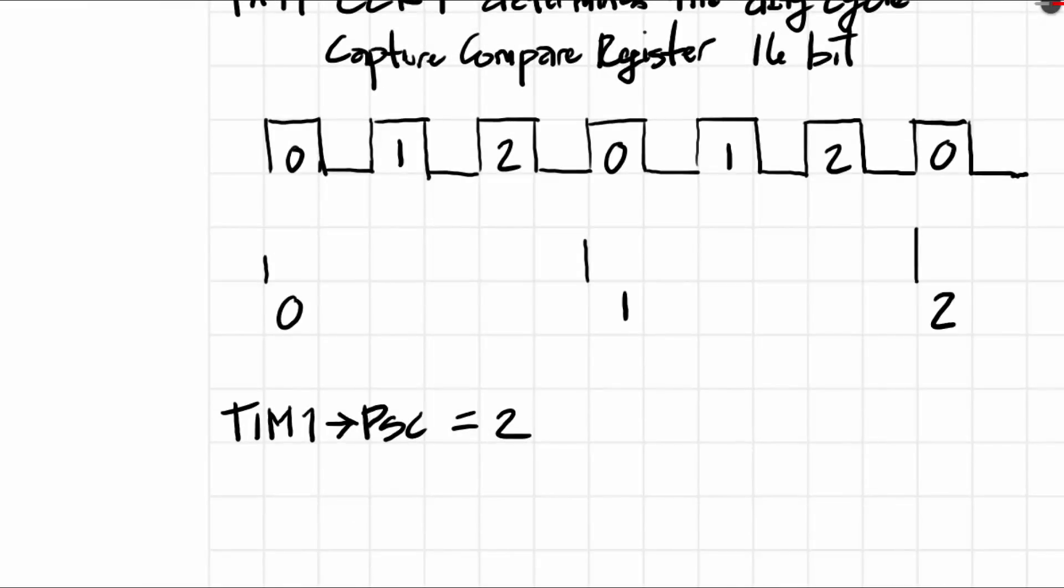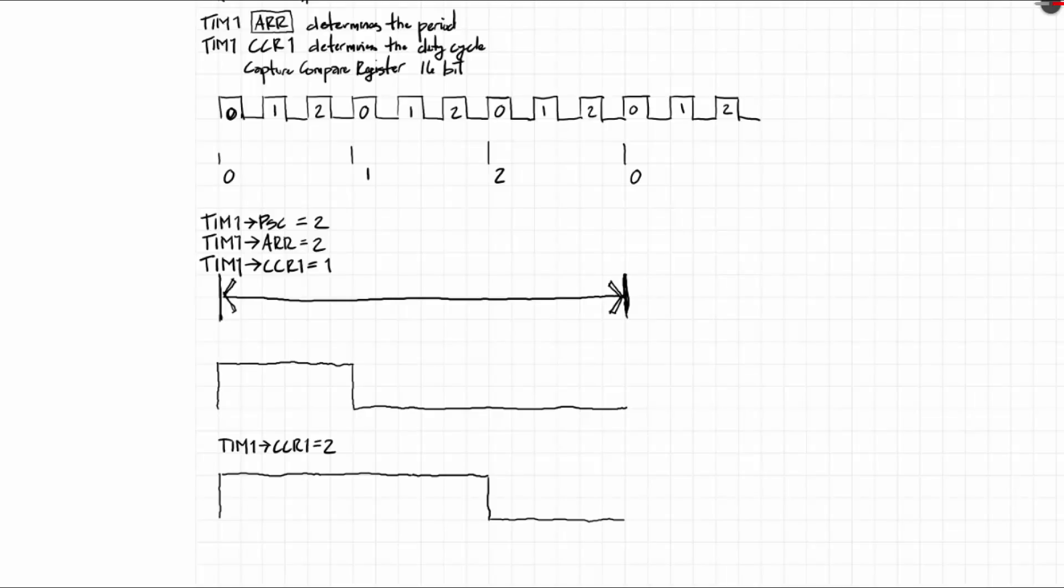The count would happen like this. The count would actually skip what happened on every 3 oscillations, because it's based on a 0-based index.